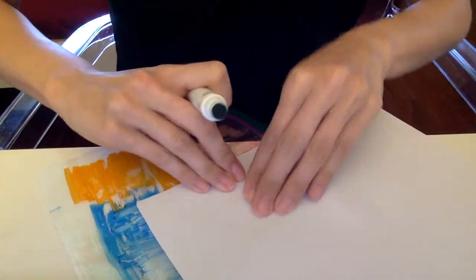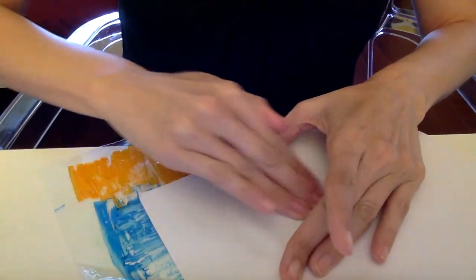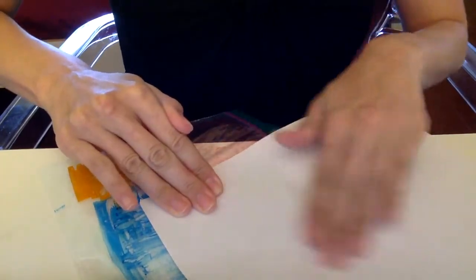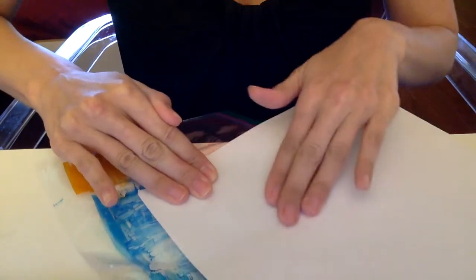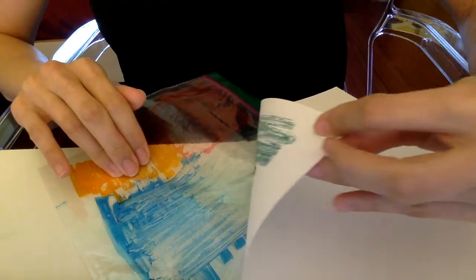Now put your paper on top and smooth it onto the plastic to make sure the ink really gets onto it. And you want to do this fairly quickly because otherwise the ink starts to dry on the plastic. Let's see how it looks when we peel it up.